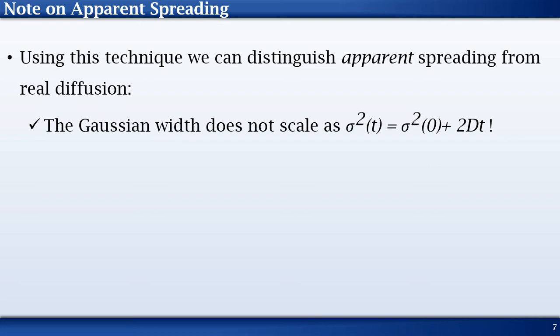One important advantage of using the streak camera with this type of fitting procedure is that we can now differentiate pattern spreading from actual diffusion. Normally, the Gaussian spreading can be modeled by a linear equation as shown here with sigma squared as a function of time.